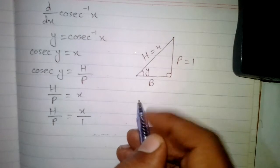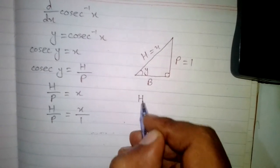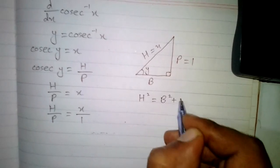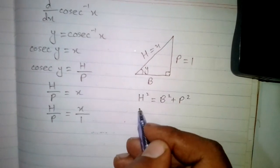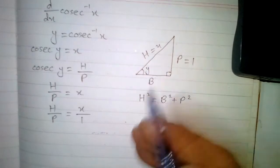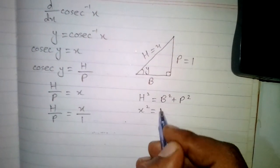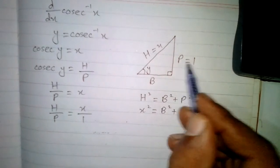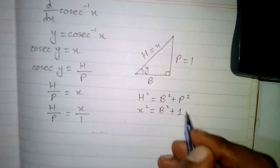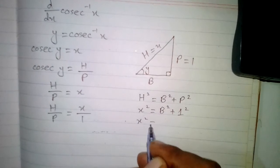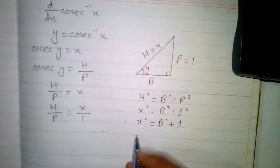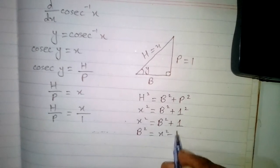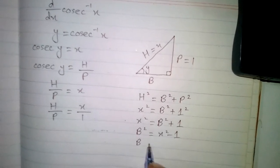Now we have to find the value of base, so we use the Pythagoras theorem: hypotenuse squared equals base squared plus perpendicular squared. Putting in the values, x squared equals base squared plus 1, so base squared equals x squared minus 1, and the value of base is square root of x squared minus 1.